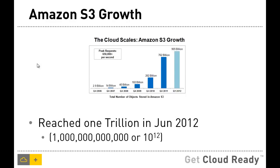Amazon S3 happens to be one of the fastest growing services from the AWS portfolio. As of last year, S3 stored about 905 billion objects with API requests peaking at 650K. That didn't really stop there. In June 2012, Amazon reported they are storing 1 trillion objects. By now, this number would have dramatically gone up, and this is an indication of how fast the cloud storage market is moving.